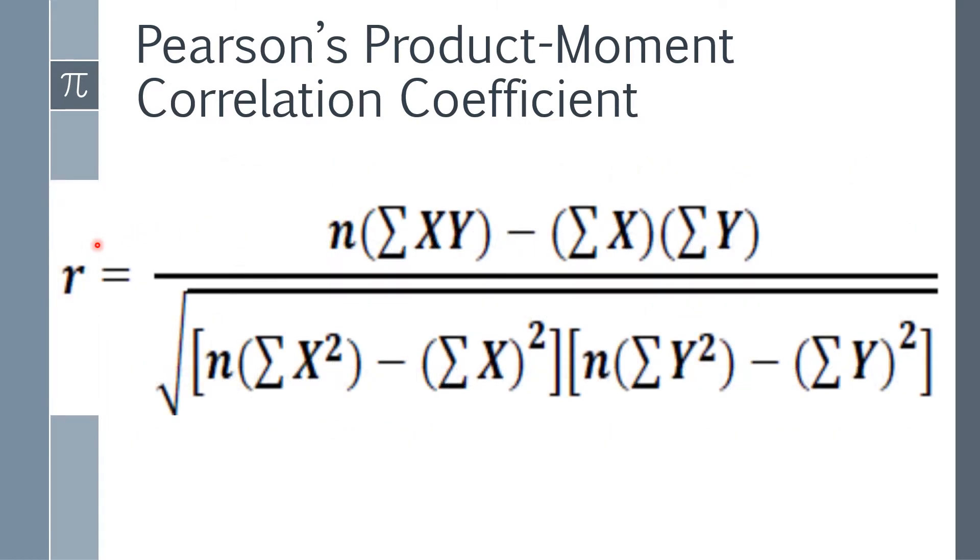So r is equal to the sample size multiplied by the summation of xy, product of x and y, minus the summation of x multiplied by the summation y, all over the square root of